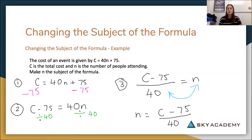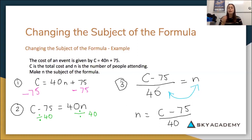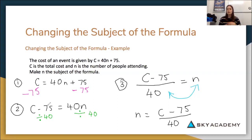When doing subject of the formula questions, you want to get a different letter by itself out the front to be the subject, with the rest of the equation on the right-hand side. You do this by slowly removing terms from the side containing the target variable. Whatever numbers are on that side, get rid of them to make the variable by itself — we took away 75, then took away the 40 — always doing the opposite: if it's a plus, do a minus; if it's a times, do a divide.